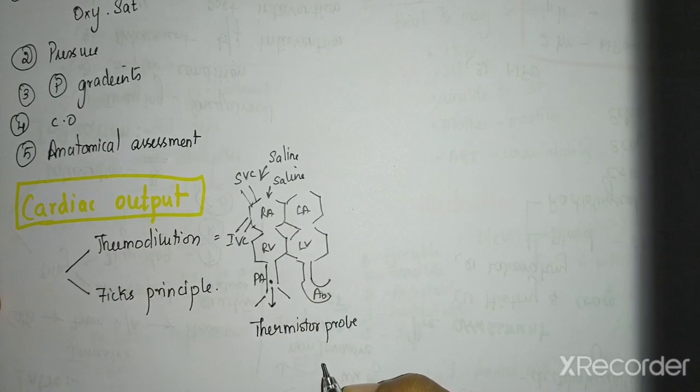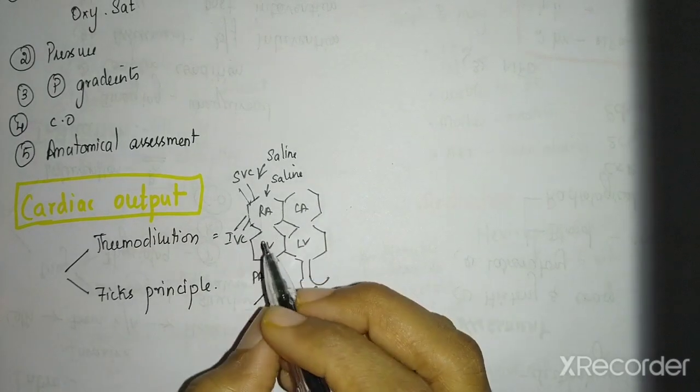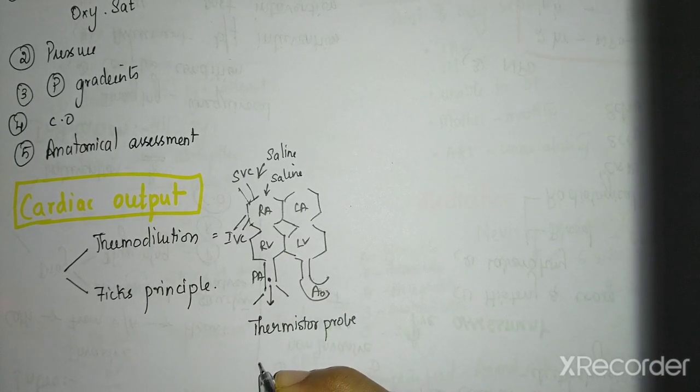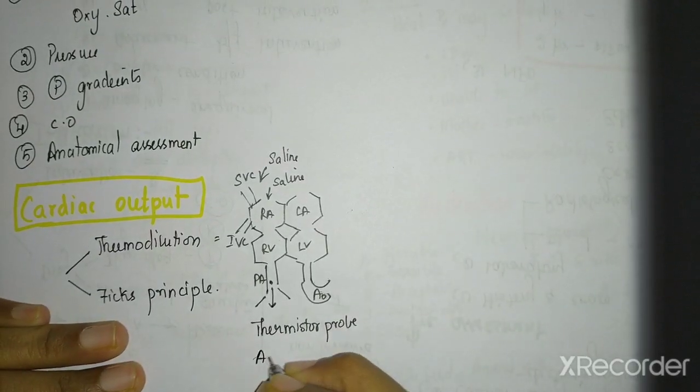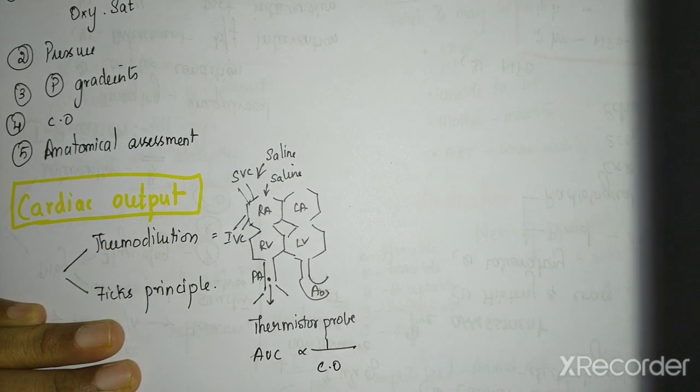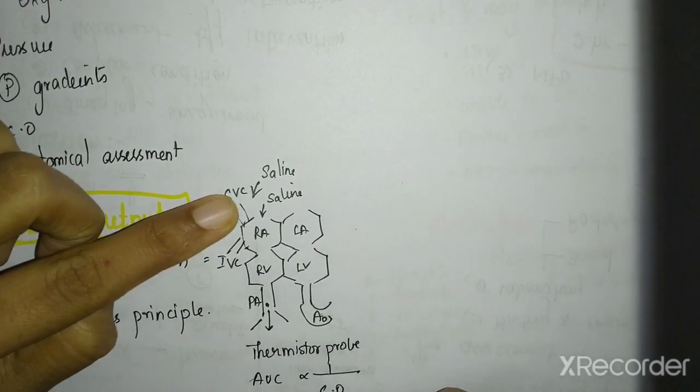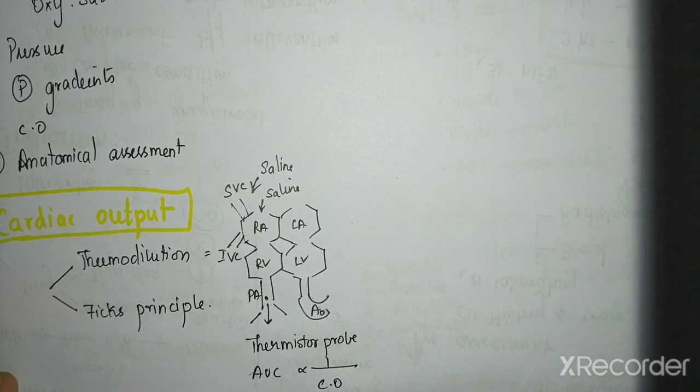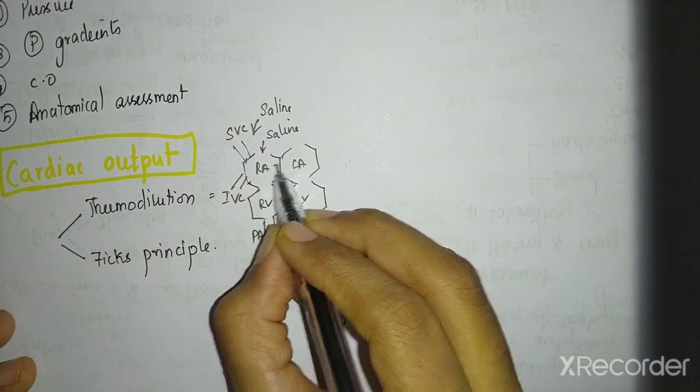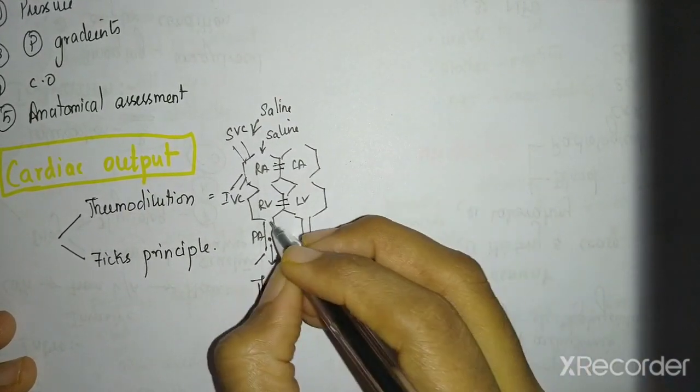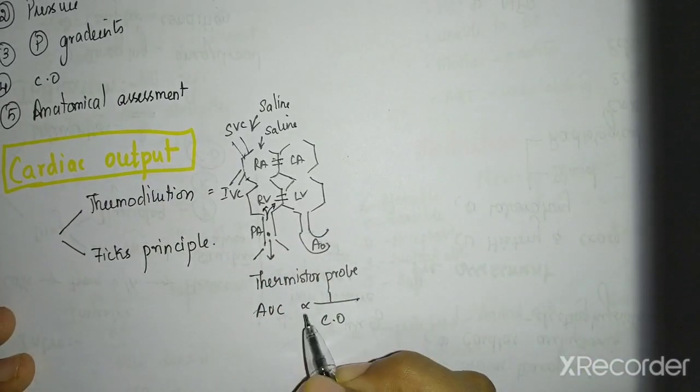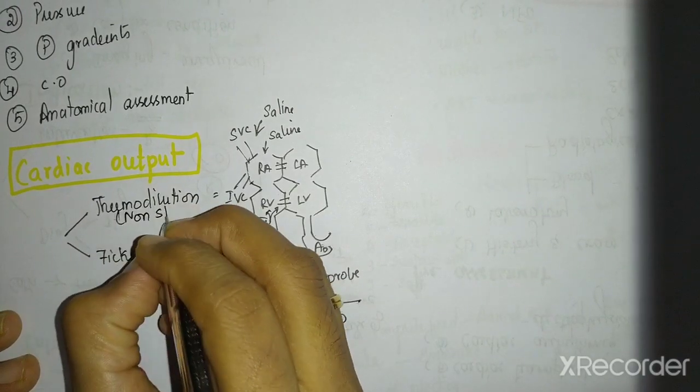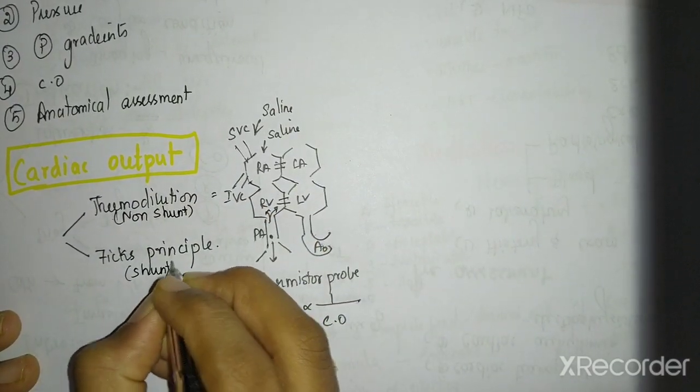So this thermistor probe measures the difference in temperature. Usually it is at the pulmonary artery. So from pulmonary artery when it is measuring, it provides a curve I can say. And the area under curve will be inversely proportional to that of the cardiac output. So the change in temperature from here to here is plotted as a temperature time graph. And this area under curve is inversely proportional to cardiac output. But the problem here is there should not be any mixing at any place. If there is a shunt or say if there is a regurgitation which is happening, then this cannot be applied. So in those situations Fick principle is used. So non-shunt situations, thermodilution method for cardiac output and shunt situations, Fick principle.